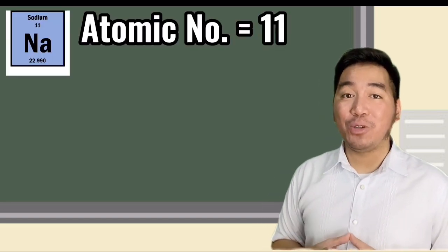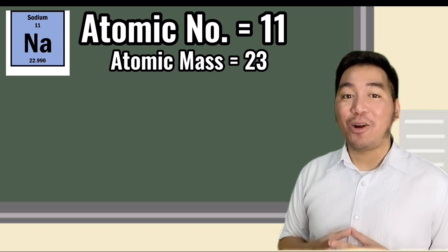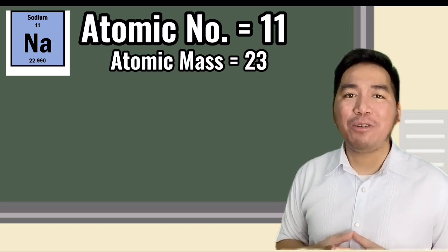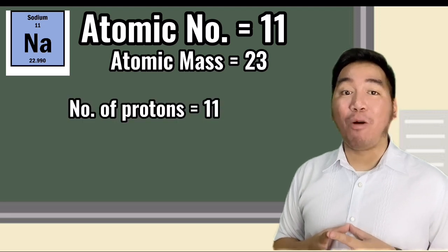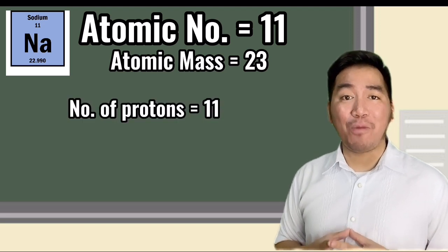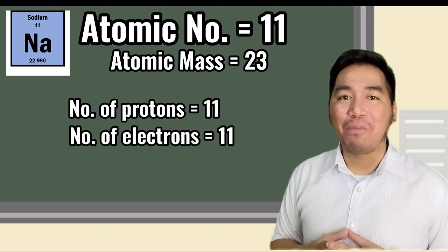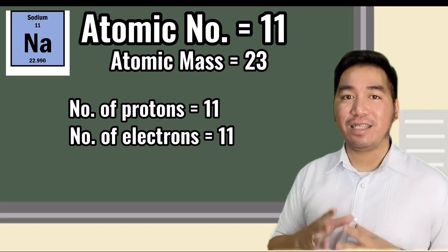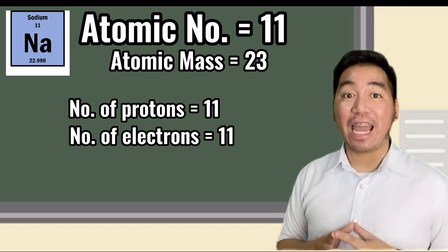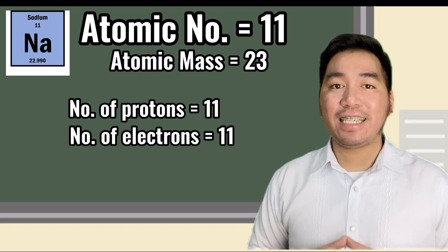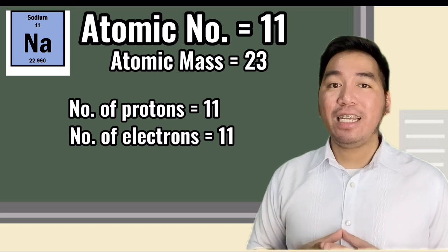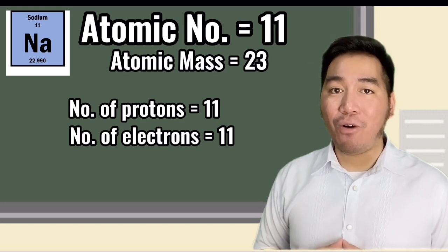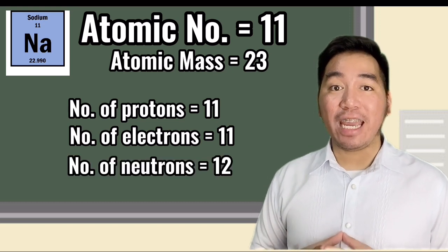let us have a recap using the given example. The atomic number of sodium is 11. The atomic mass is 22.919 or rounded off to 23. The number of protons is the same with the atomic number. The number of electrons is equal to the number of protons. Thus, sodium has 11 electrons. As I said, the number of neutrons is equal to the difference between the mass number and the number of protons. Therefore, the number of neutrons is 12.